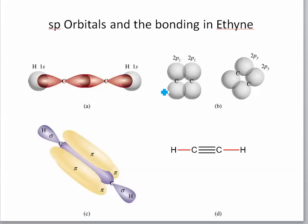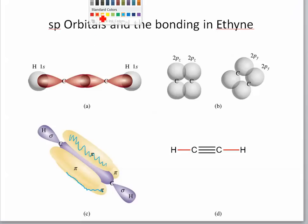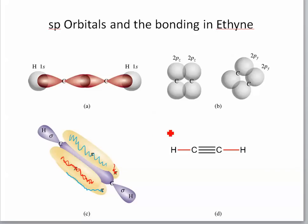With two unhybridized p orbitals remaining, two pi bonds are formed. In the triple bond, one of the three bonds is the sigma bond from the sp hybridized orbital, and then there are two pi bonds from the two sideways p orbital overlaps. The lobes of these pi bonds are color-coded here: one cuts through the middle of the molecule and the other is perpendicular to it, though it's partially obscured. So you've got two sideways-overlapping pi bonds along with the sp hybridized sigma bond, giving a triple bond with one hydrogen on each end.